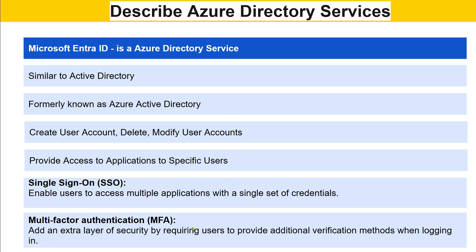Multi-factor authentication — you might have also heard about MFA. It adds an extra layer of security by requiring users to provide additional verification methods. For example, nowadays many applications first ask for your credentials and then ask you to enter an OTP. That's multi-factor authentication. Or it might ask you to use face ID — various ways to verify that you are the right user.